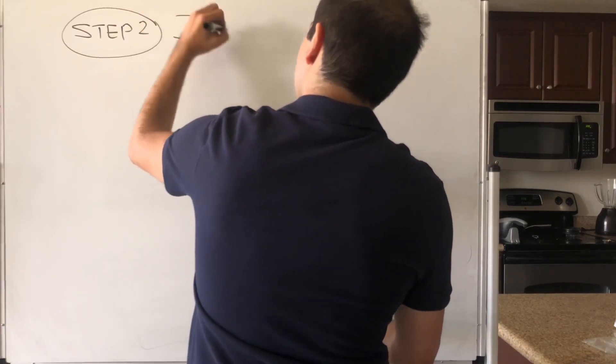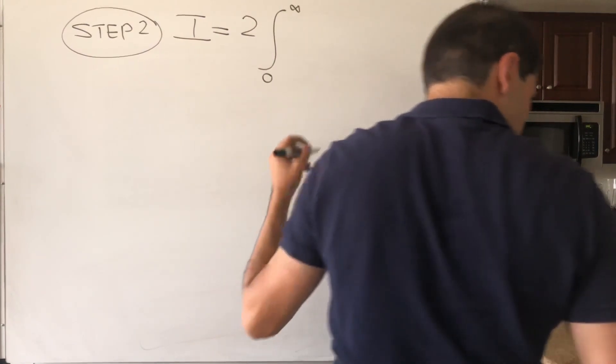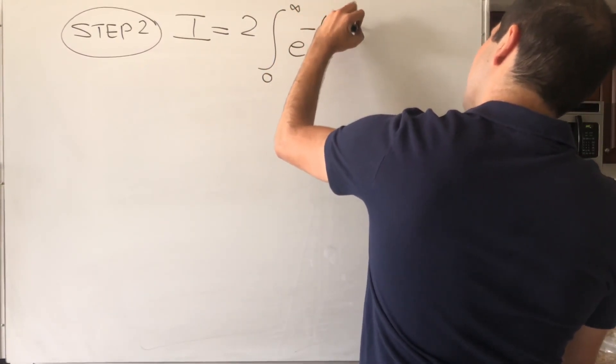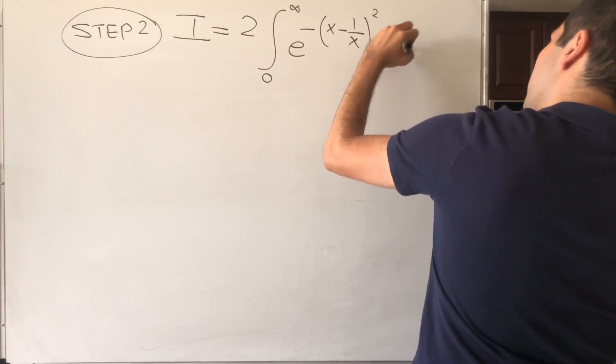Again, i becomes two times integral from 0 to infinity of that integral. So e of minus x minus 1 over x squared times 1 plus 1 over x squared.